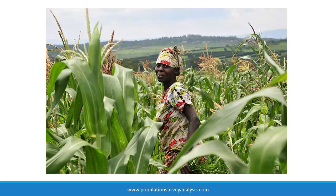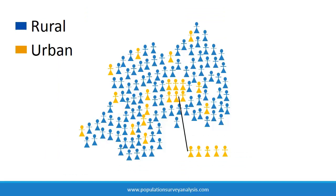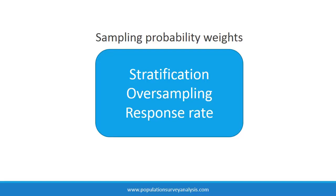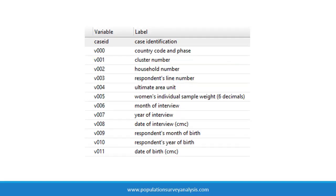Response rates can bias mean estimates if certain kinds of people systematically refuse or are not available to participate in household surveys. For example, if interviewing is performed at a time of day when women farmers tend to be away from the house working in the fields, and interviewers are more likely to encounter sick women than healthy women, then the sample is not representative of the population. Although we do not know the characteristics of the women who were not interviewed, we can calculate the probability of selection among those who were interviewed and adjust the contribution of their information to our mean estimate. Sampling probability weights adjust for unequal probability of selection introduced by stratification, oversampling, and unequal response rates. If analyzing a national household survey like the DHS, sampling probability weights will have been calculated for you and provided in the dataset.